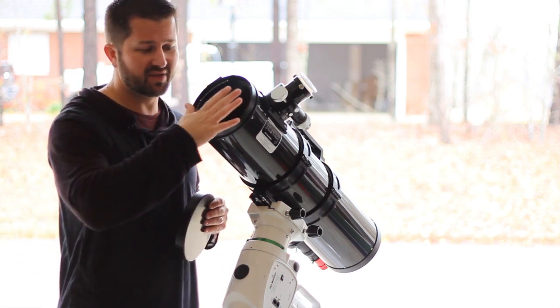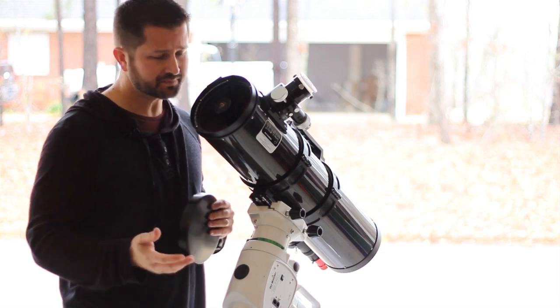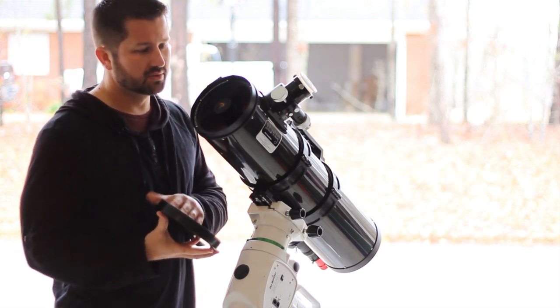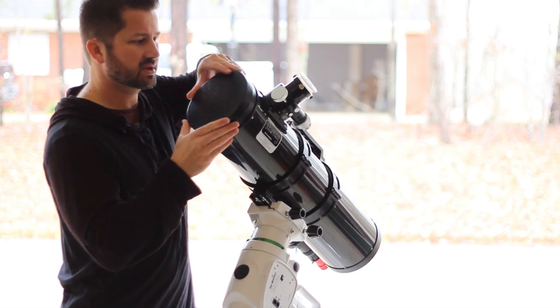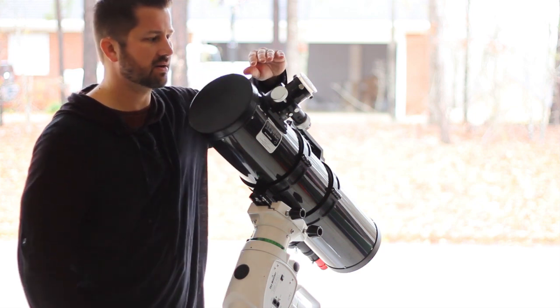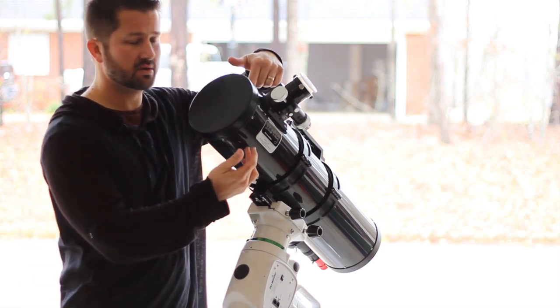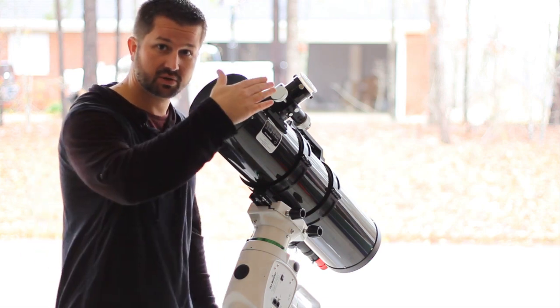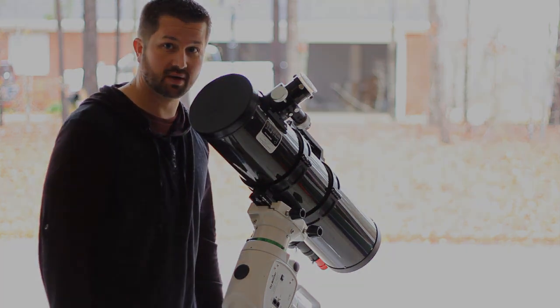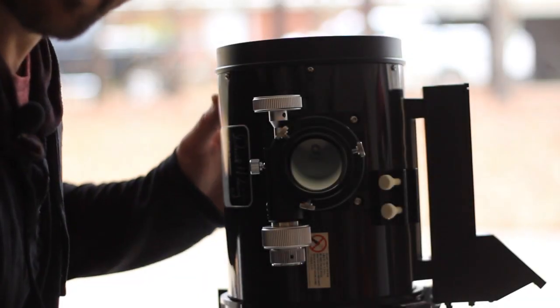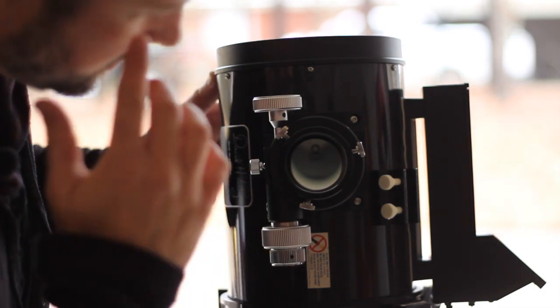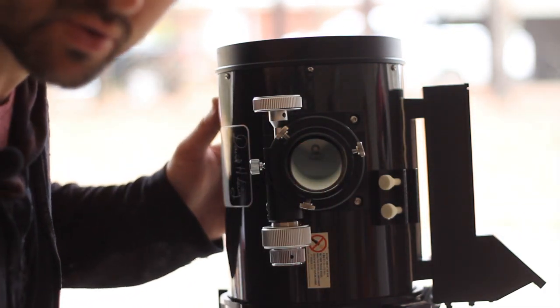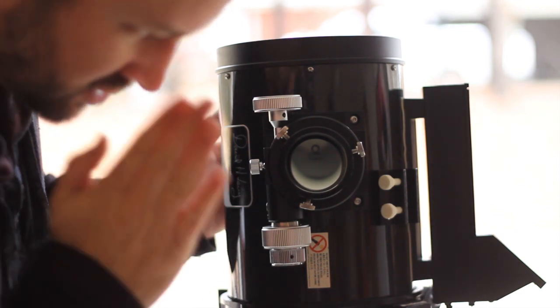Now true collimation begins with adjusting the secondary mirror which sits right in here. The first thing we're going to do is look down this focuser draw tube.